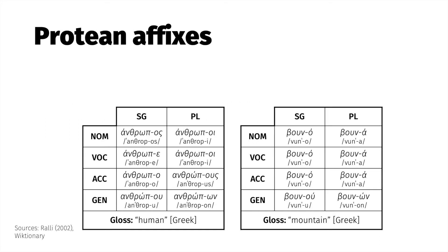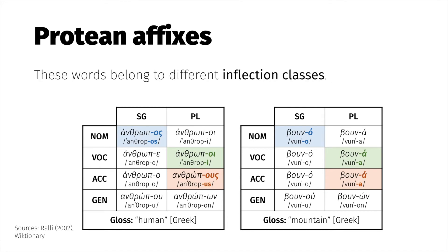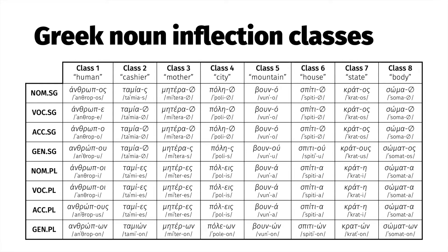More strikingly protean morphemes can be found in Modern Greek. Here are the inflectional paradigms for two nouns. The nominative singular of 'human' ends in -os, while the same form of 'mountain' ends in a different suffix. Other cells in the paradigms likewise vary, like the vocative plural or accusative plural. These inflectional differences are quite systematic — many Greek nouns behave like 'human,' many like 'mountain.' These words are said to belong to different inflection classes. In fact, there aren't just two, but eight inflection classes for Greek nouns, as this table illustrates.